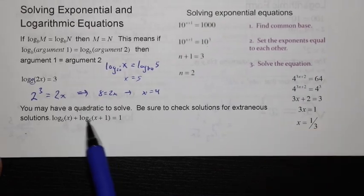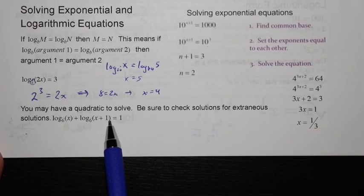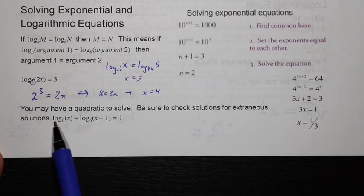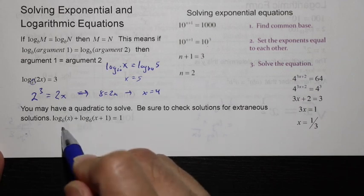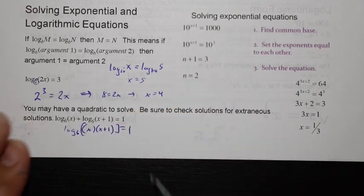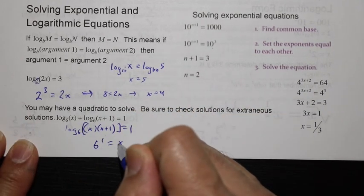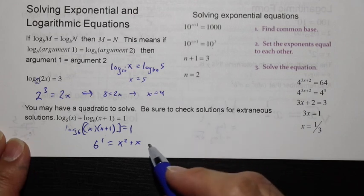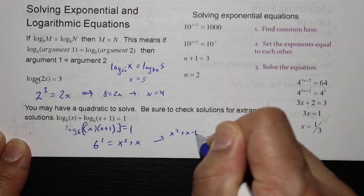You may have in some cases a quadratic to solve. You have log base 6 of x plus log base 6 of (x + 1). Remember the addition rule of logs is that this addition of logs here is the log of the product of the arguments, so this is log base 6 of x(x + 1). Now we have one log equaling a number. We can convert. Here this is 6^1 equals x^2 + x. Now we can use our rules of quadratic so I continue to solve this as x^2 + x - 6 equals 0.